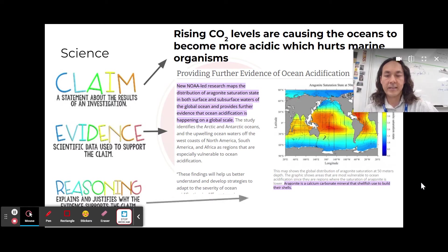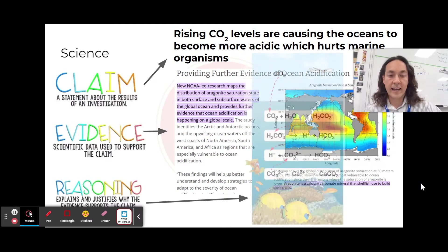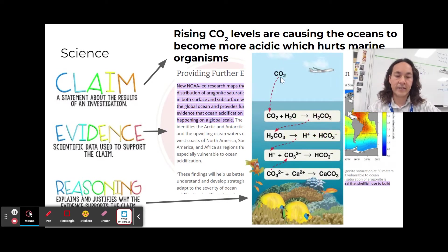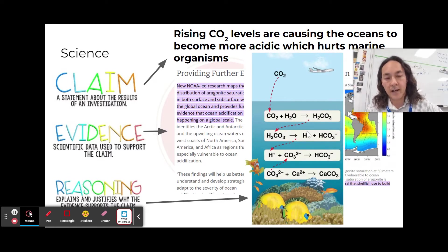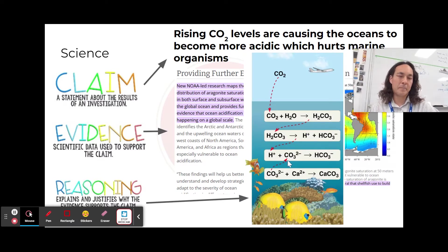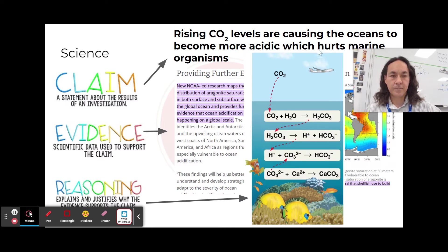And then my reasoning is: what's the actual science behind it? Here I'm going to explain that carbon dioxide comes into water, it makes an acid. This acid makes H+ ions, which compete with corals for carbonate. So it's going to compete with them for carbonate, which is going to hurt the corals and other shell-making organisms.